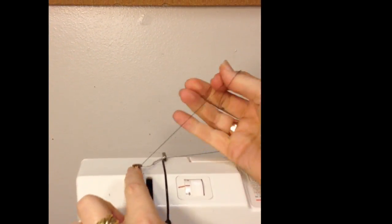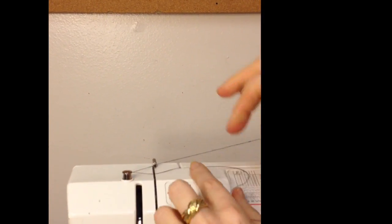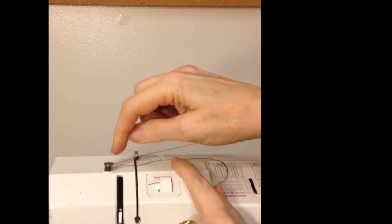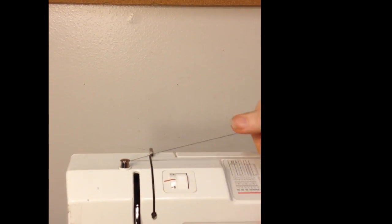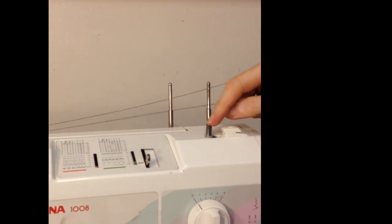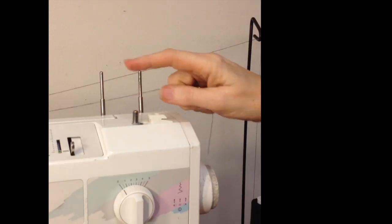It's kind of like flossing your teeth. Just slide that in there. There are arrows around on the top of it that show you which direction to go around. And then we come over here to the bobbin winder itself.